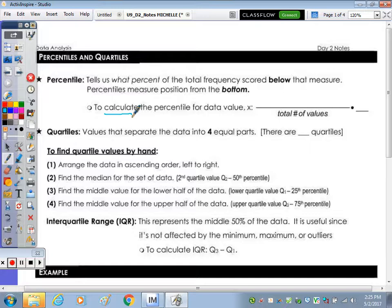To calculate the percentile for data value x, you look at the number of values—another word for below is less than x—so you look at the numbers below you, out of the total, and because it is a percentile, we multiply by a hundred. And we're going to do an example, or calculate, or find the percentile for a piece of data below.